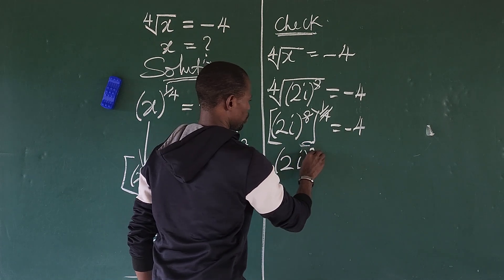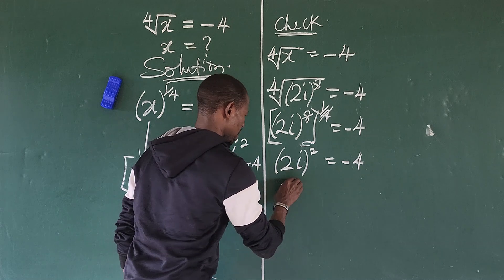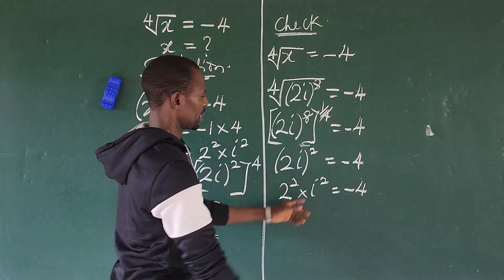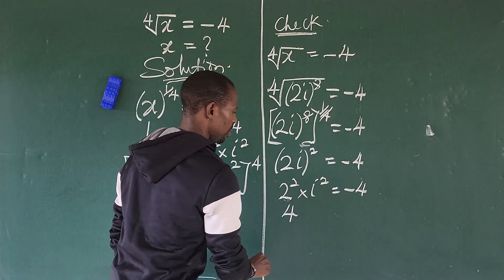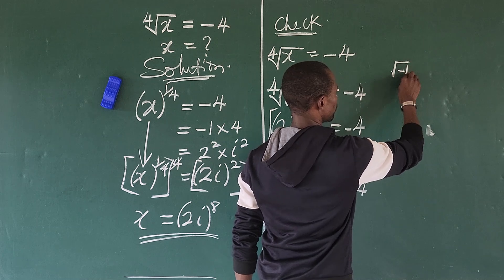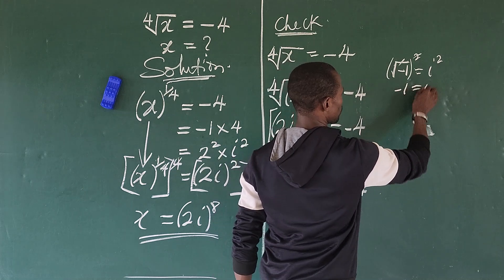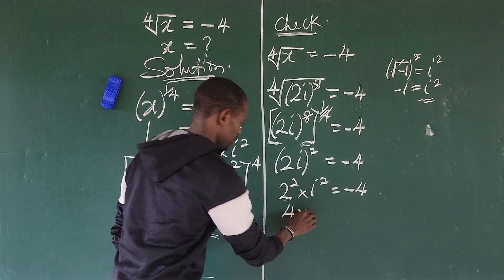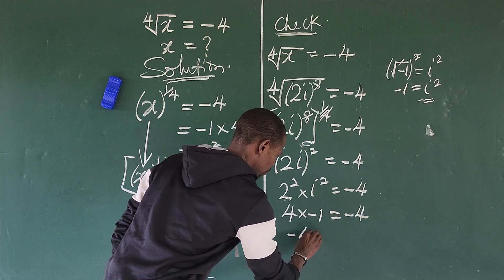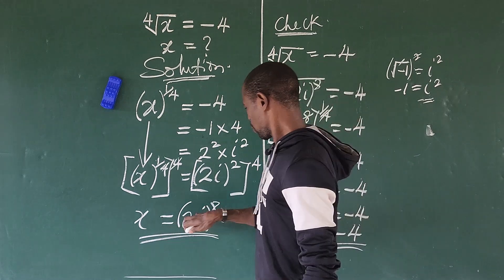So we end up with two·iota to the power of two, equal to minus four. Opening this up gives two to the power of two, times iota to the power of two, equals minus four. Two to the power of two is four, and since iota squared equals minus one, we have four times minus one, which gives minus four. So minus four equals minus four — the verification checks out.